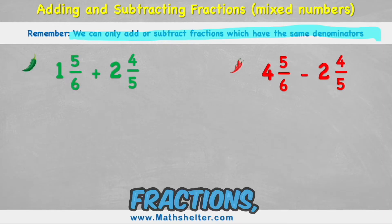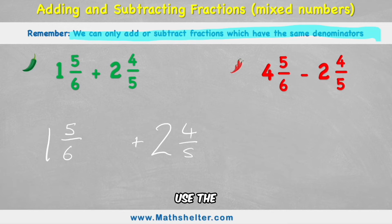So I'm going to rewrite my fractions, but this time I'm going to use the denominator 30 for its equivalent fraction. So how did I get from 6 to 30? Well, I multiplied by 5. So to keep the fraction equivalent, I need to multiply the numerator by 5 as well.